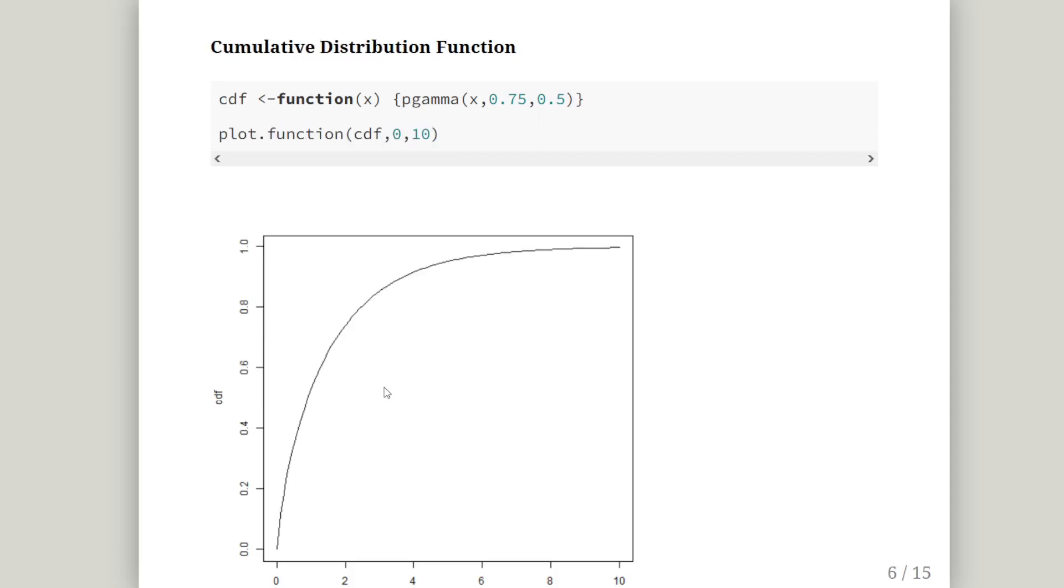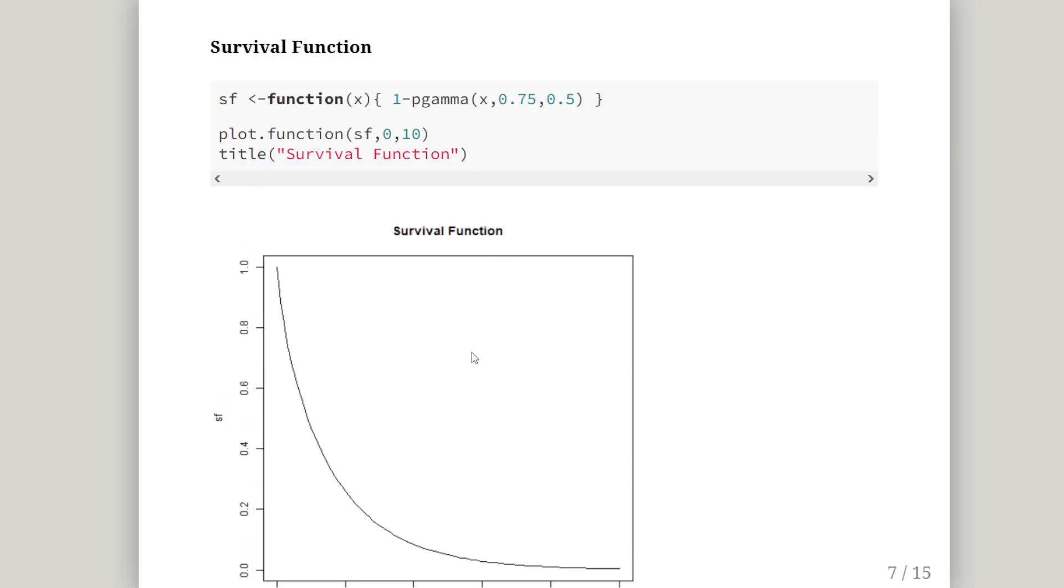Let's go a little bit more complicated. The cumulative distribution function, CDF. In this case, I'm using P gamma instead of D gamma. So I'm going to create that as a function, CDF, and I'm going to plot that from 0 to 10. So there we have that curve there. That's all we have to do essentially.